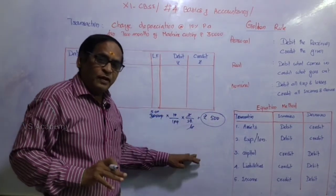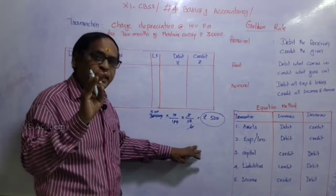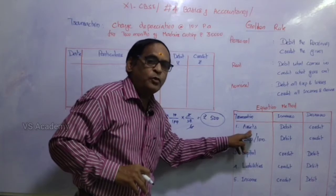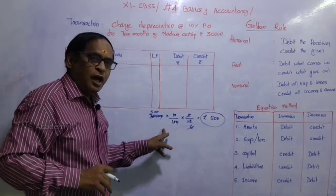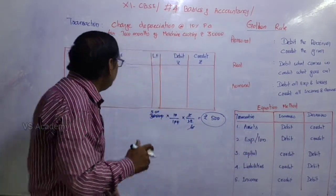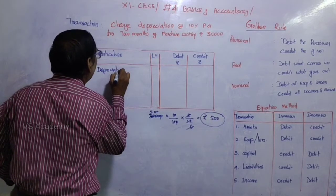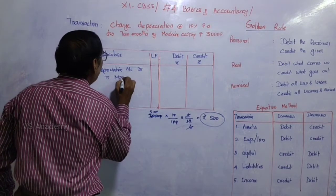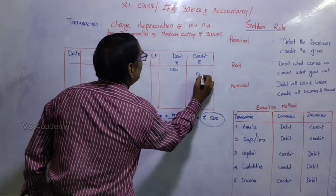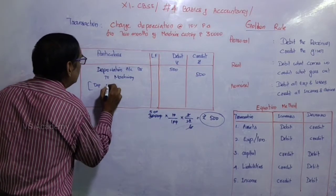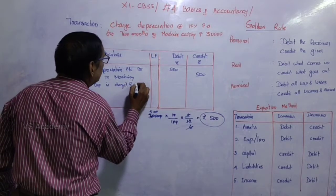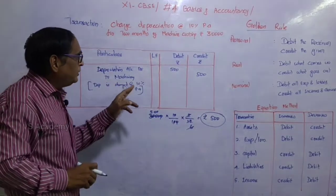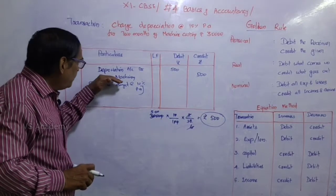Under the incubation method, depreciation is the reduction in value of an asset. Since machinery value has decreased, machinery account should be credited. It is a loss, and increase in loss is debited, so depreciation account should be debited. Under the golden rule: debit all expenses and losses, and credit what goes out — so machinery account is credited.